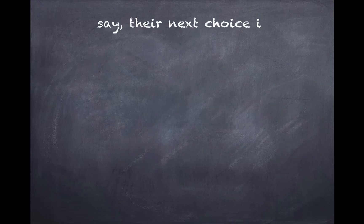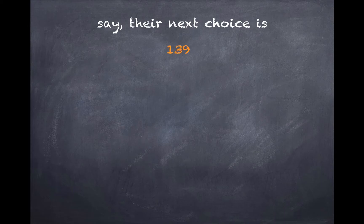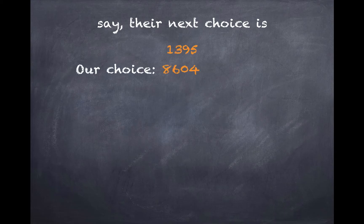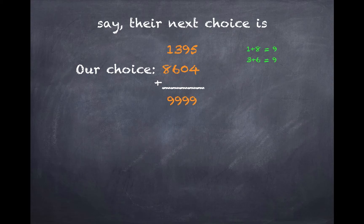Then, it's their turn again. So let's say they choose 1395. So our choice will be 8604. Again, it's the same idea to make 9999. We see that the digits, again, add up to being 9.